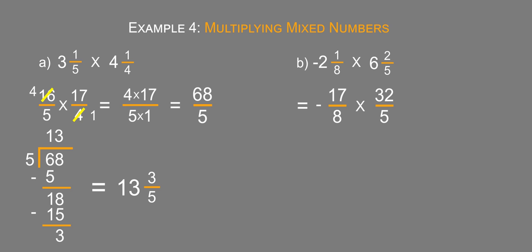We'll use our trick again because 32 and eight have a common factor of eight. 32 divided by eight is four. Eight divided by eight is one. So then our problem ends up being multiply across the top, multiply across the bottom. I'm going to keep the negative with the 17. So negative 17 times four over one times five.